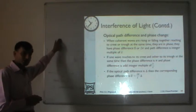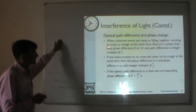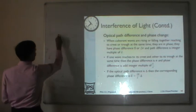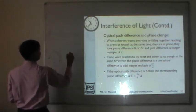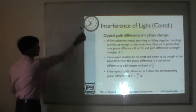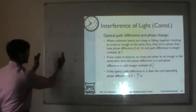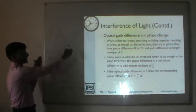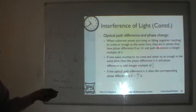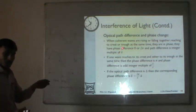When coherent waves are rising or falling together — reaching crests or troughs at the same time — their phase difference is 0 or 2pi, because if you shift the wave completely by 2pi you get the same pattern again. Equivalently, the path difference is lambda. So a 2pi phase difference corresponds to a lambda path difference.